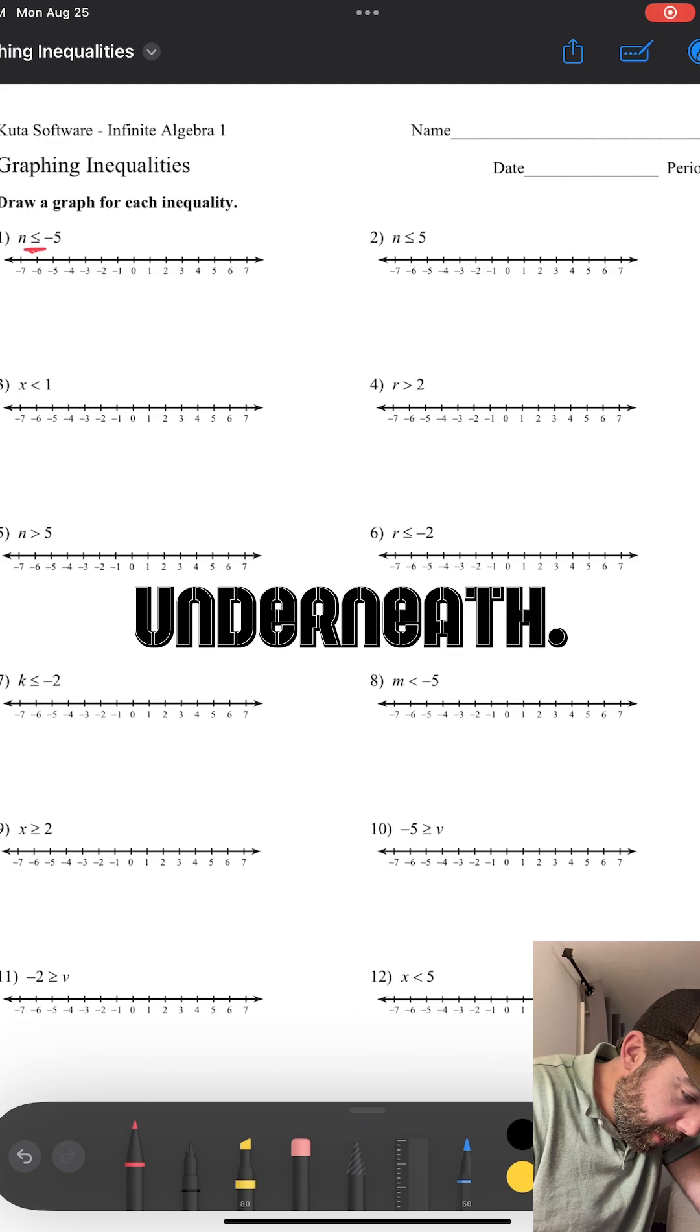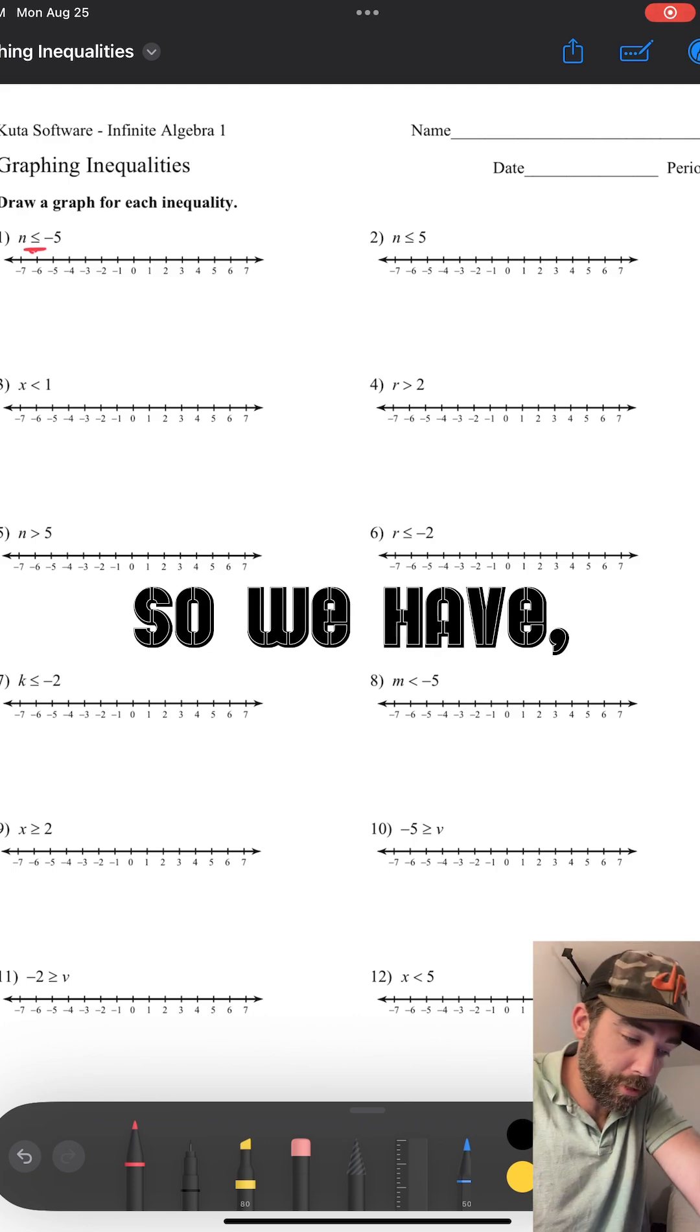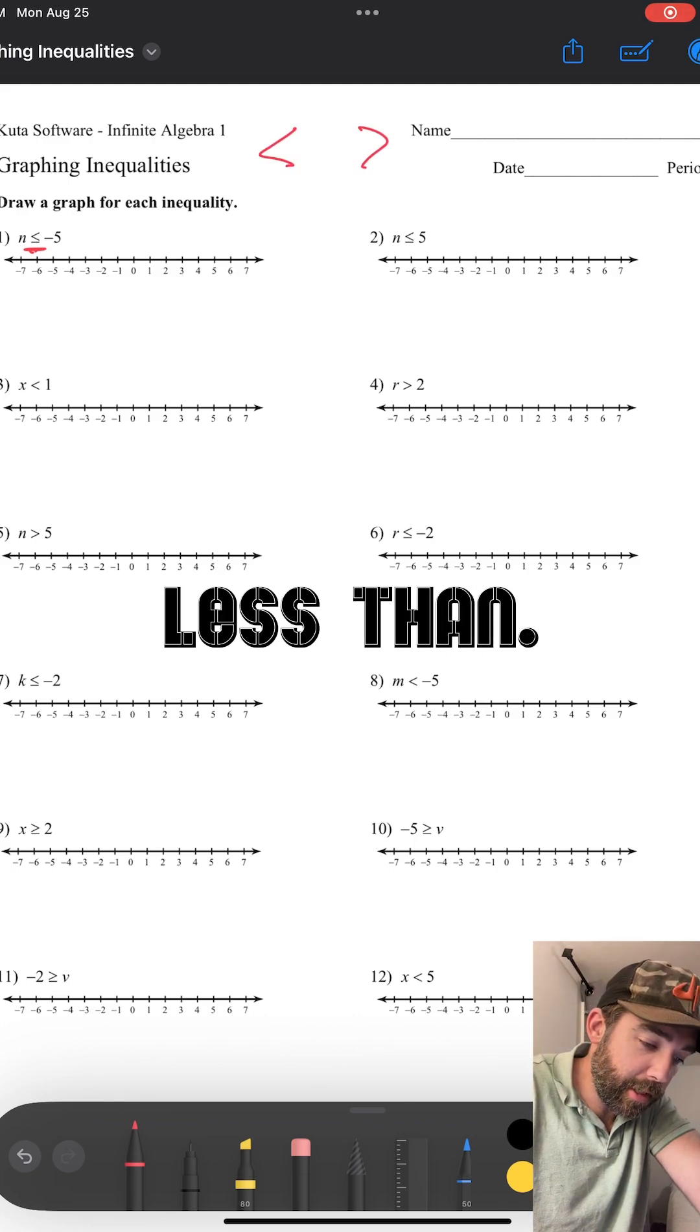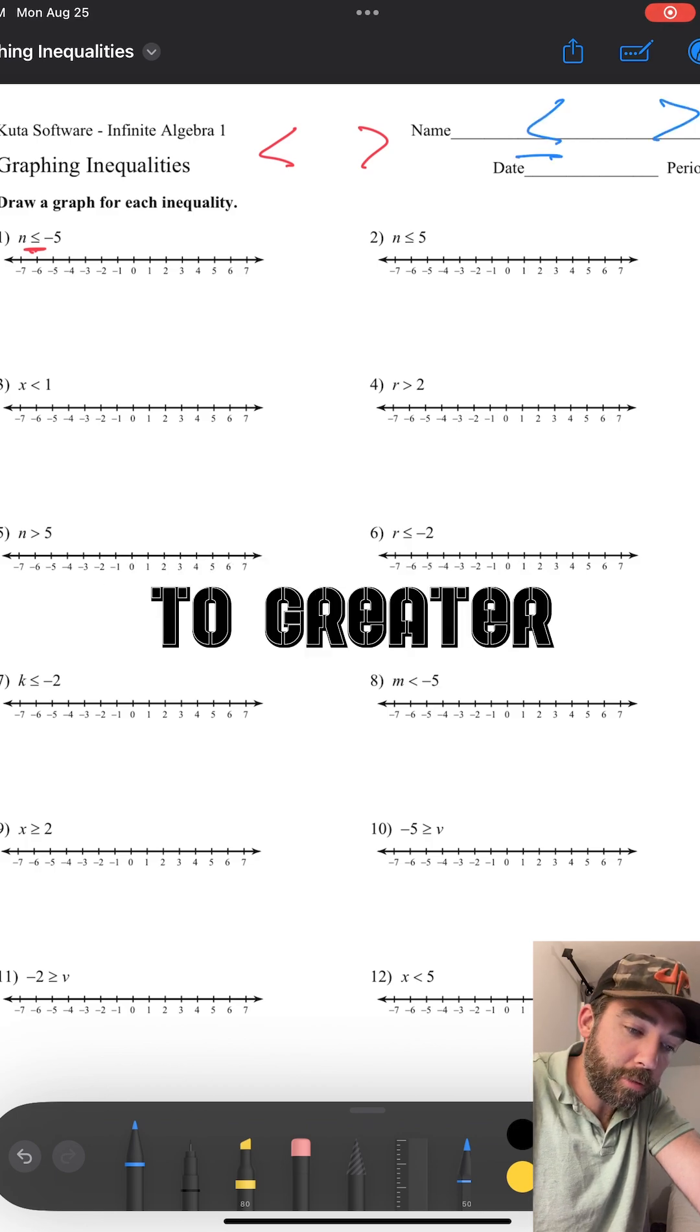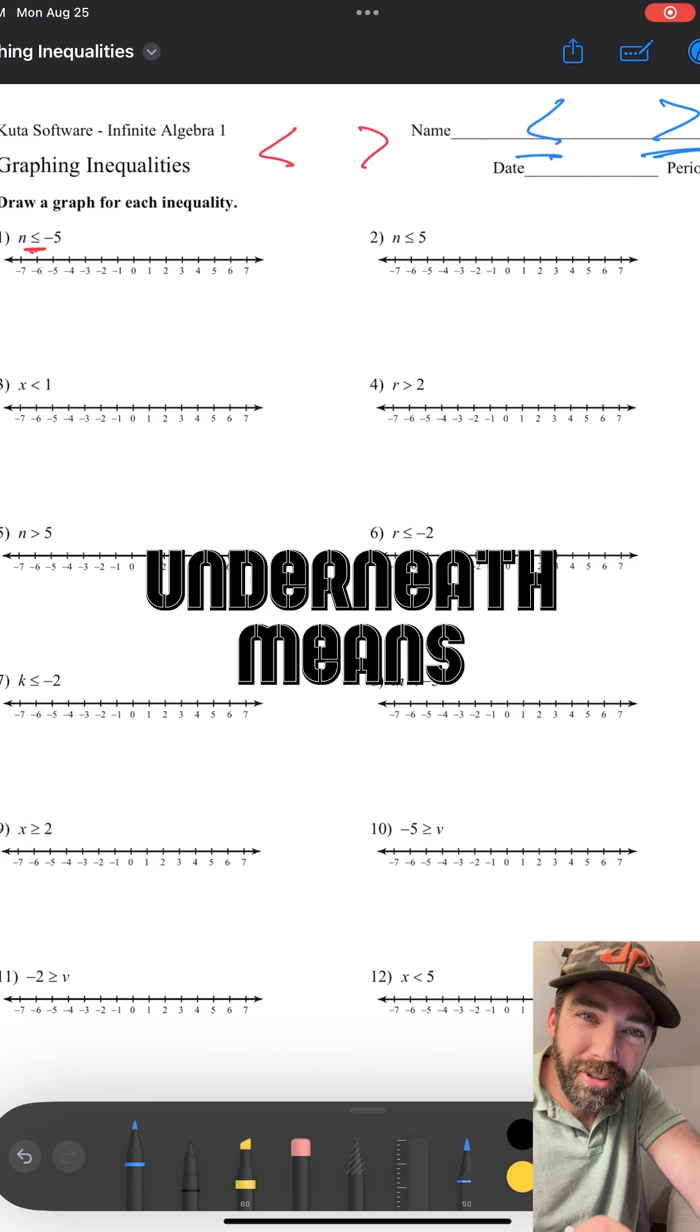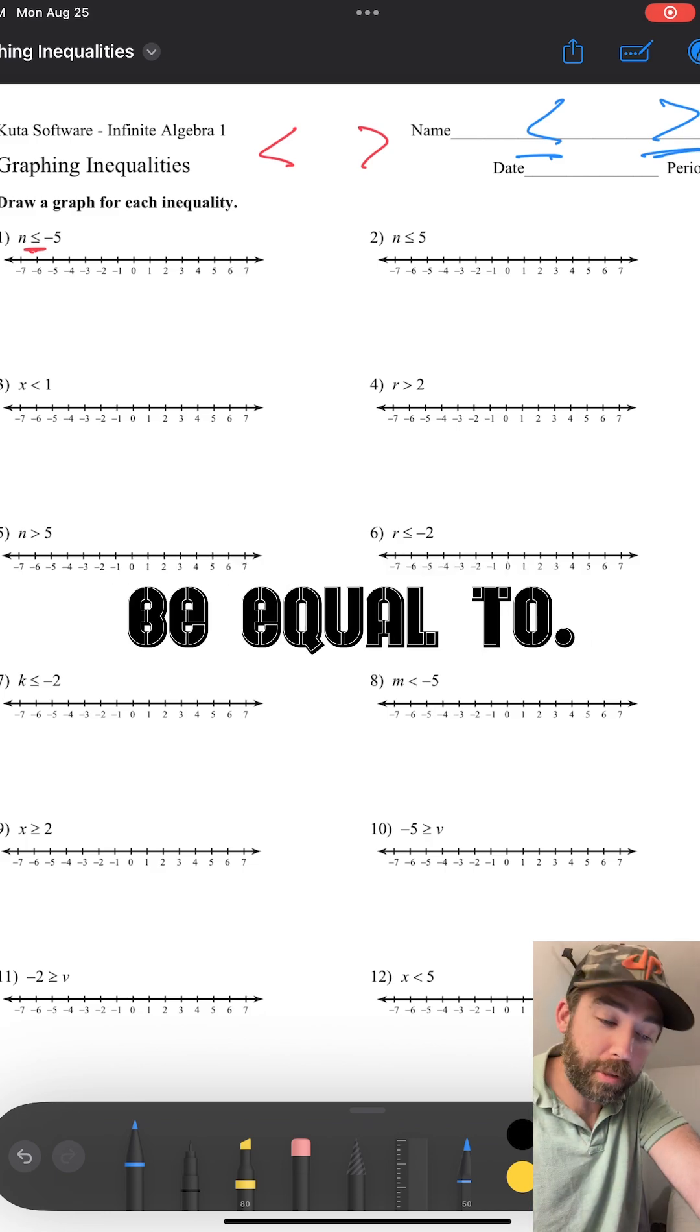If there's a line underneath, we're filling in the circle. So we have less than, greater than, then we have less than or equal to, greater than or equal to. The line underneath means it could also be equal to.